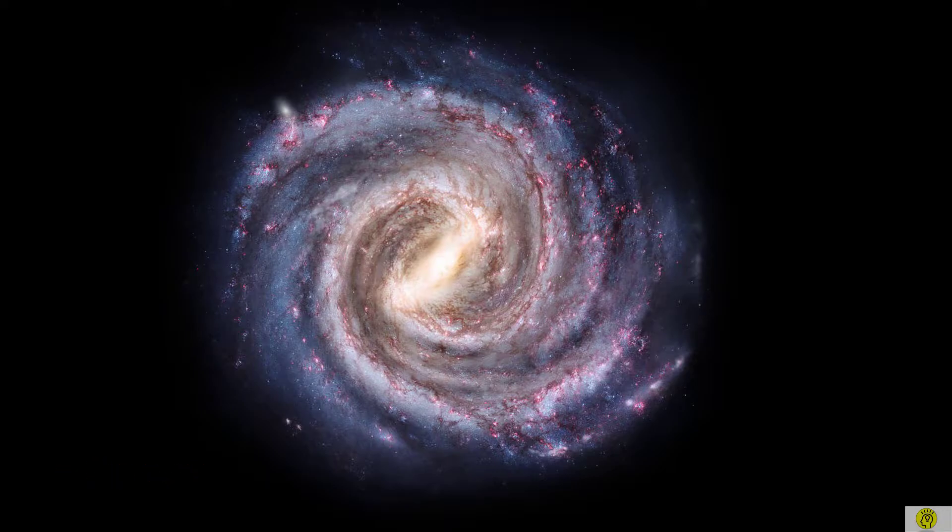Next let's consider where our Sun is located in the Milky Way. The diameter of Milky Way is about 100,000 light years.